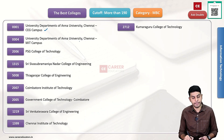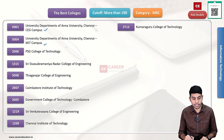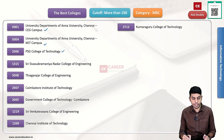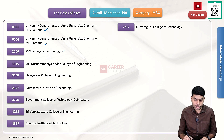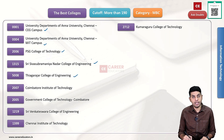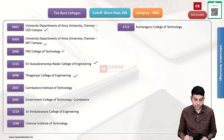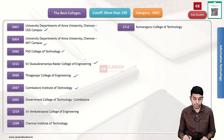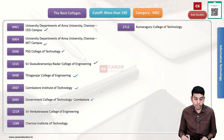Since the current DC category is calculated in BC category: 0001 CEG Campus, 0004 MIT Campus, 0006 PSG College of Technology, 1315 Sri Sivasupramani Nadar College of Engineering, 5008 Thyagarajar College of Engineering, 2007 Kaimathur Institute of Technology.